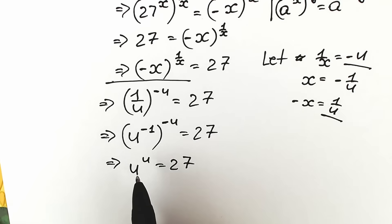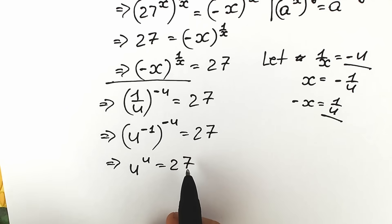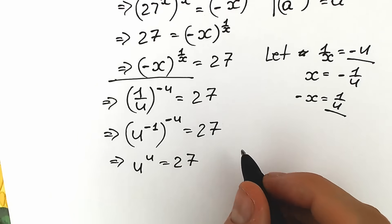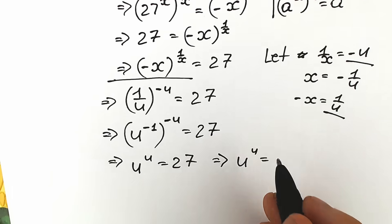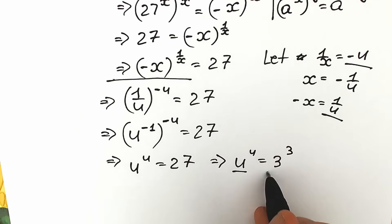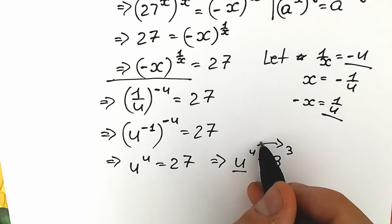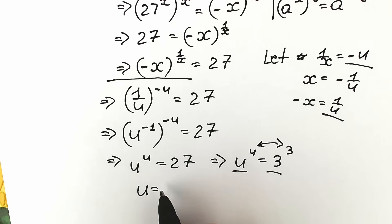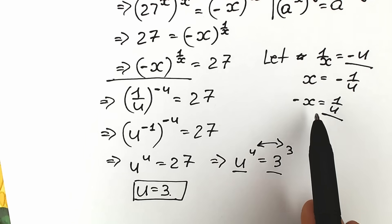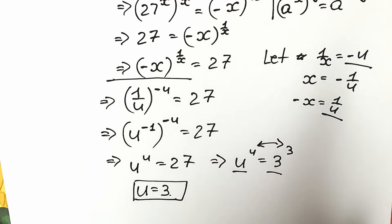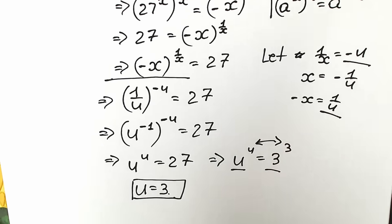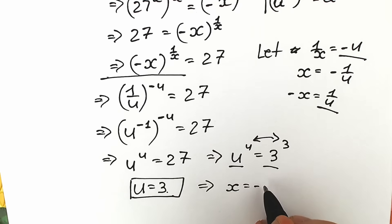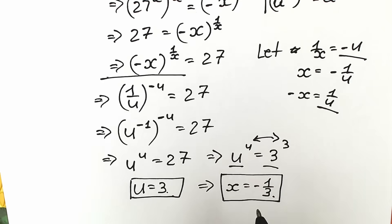We can substitute u with x if easier, since we have the same base and exponent. We know 27 equals 3 cubed, so u to the power u equals 3 to the power 3. Same base, same exponent, so u equals 3. Back-substituting into x equals minus 1 over u gives x equals minus 1 over 3. We'll verify this shortly, but first let's look at the second method.